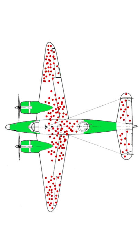Thus, Wald proposed that the US military should reinforce areas where the returning planes were unscathed, since those were the areas that, if hit, would most likely result in a plane being lost.